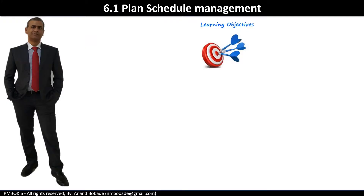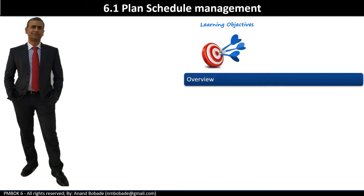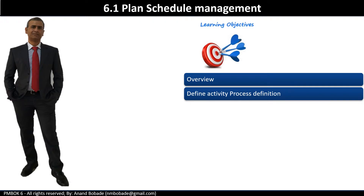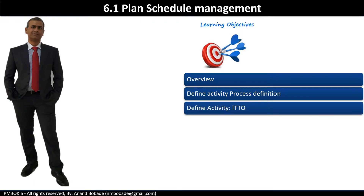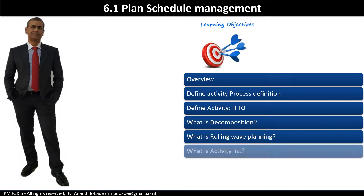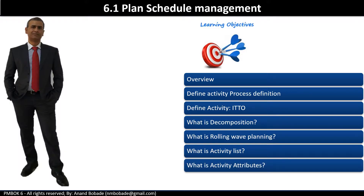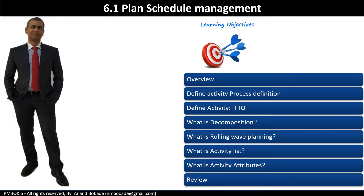The learning objectives of this session are: we'll start with an overview to understand why the define activities process is required. We'll talk about the process definition, inputs, tools, techniques and outputs, and some key tools and techniques like decomposition and rolling wave planning. Then we'll talk about the activity list, activity attributes, and finally a quick review.